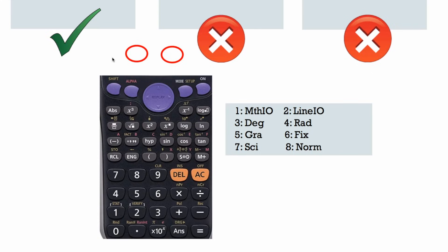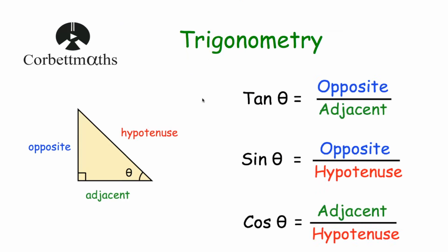If you do have an older Casio, what you'll need to do is go into Setup. So you'll press Shift and then Setup, and this menu will come up. You want number three for degrees, so you'll just press number three, and that'll have degrees selected for you at the top.